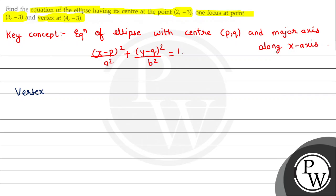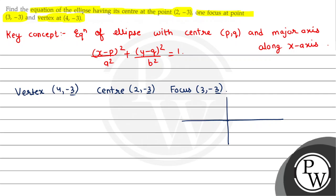So we have vertex at (4,-3), center at (2,-3), and focus at (3,-3). We can see that the y-coordinates of these three points are the same, meaning the ellipse's major axis will be along the x-axis.